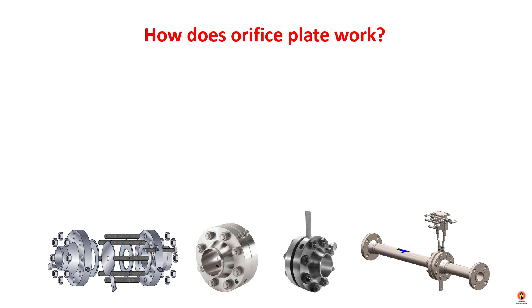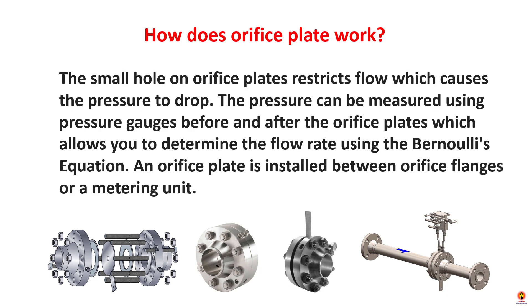How does an orifice plate work? The small hole in an orifice plate restricts flow, which causes the pressure to drop. The pressure can be measured using pressure taps before and after the orifice plate, which allows you to determine the flow rate using Bernoulli's equation. An orifice plate is installed between orifice flanges or a metering unit.